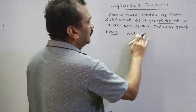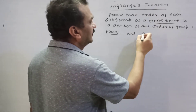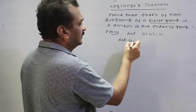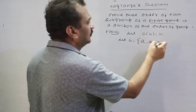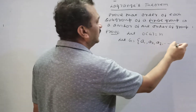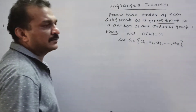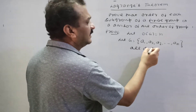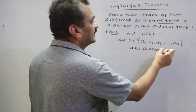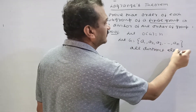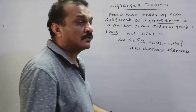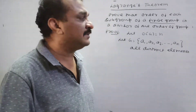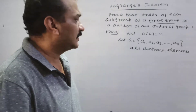Let G be a finite group of order n. Let G have elements a1, a2, a3 up to an — all distinct elements. We call them distinct elements because the order of G is n, meaning n different elements.